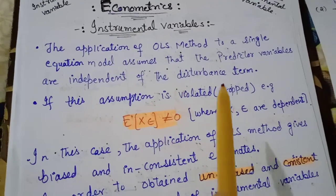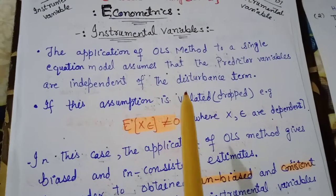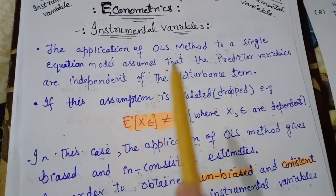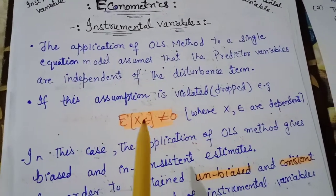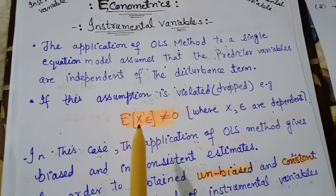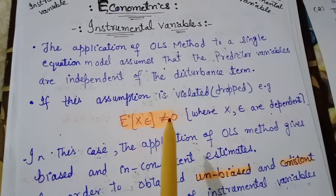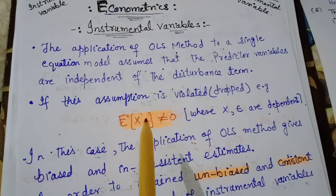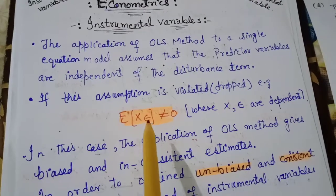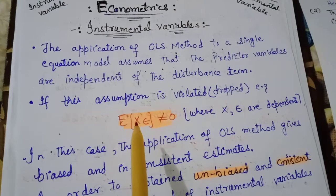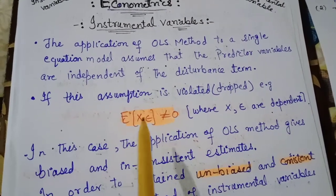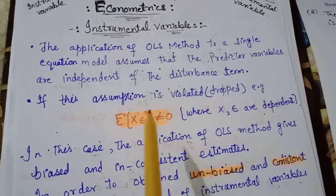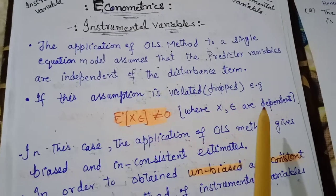If this assumption is violated — that is, if the predictor variables are dependent on the disturbance term — then we write: E(Xε) ≠ 0. This means the expectation of the product of the predictor variable X and the error term epsilon is not equal to zero, indicating that X and epsilon are dependent.